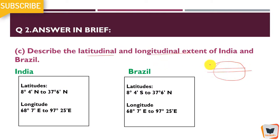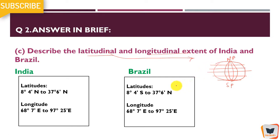Next, describe the latitudinal and longitudinal extent. Latitudes are horizontal lines on the globe, and longitudes are vertical curved lines that go from the north pole to the south pole. The extent of both countries in terms of latitudes and longitudes has been covered in the explanation video. Please go to the playlist where there is a geography explanation playlist for more detailed analysis.